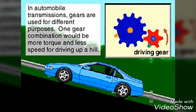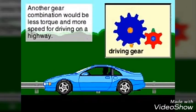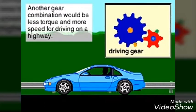One combination would be more torque and less speed for driving up a hill, and another less torque and more speed for driving on a highway.